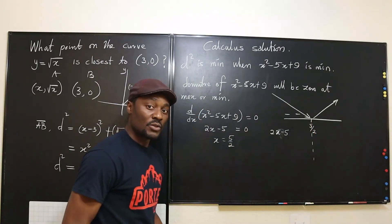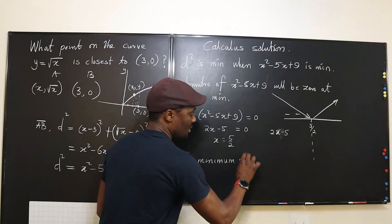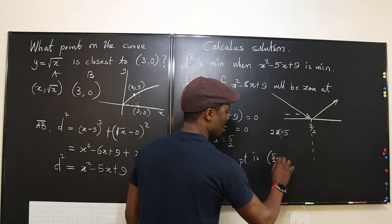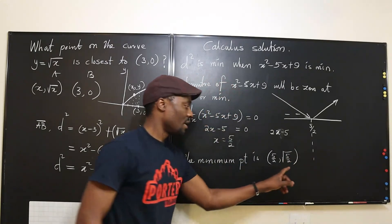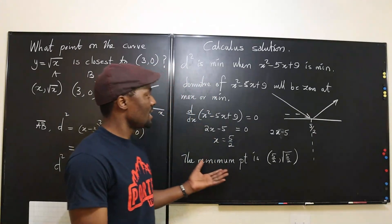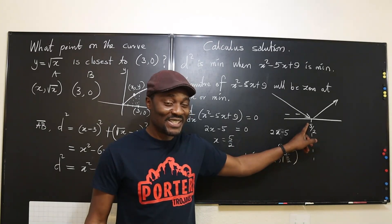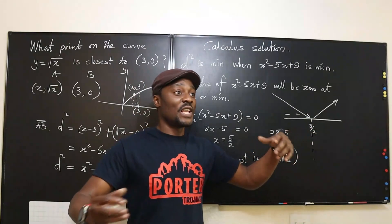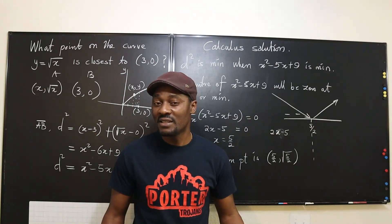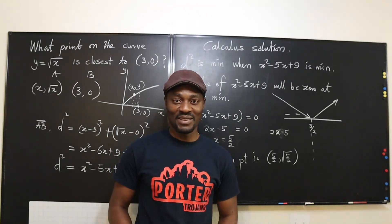So the minimum point is (5/2, √(5/2)). The y-coordinate is √(5/2) since y = √x on the curve. The calculus solution requires showing it's a minimum via the sign chart — you can't just assert it. It's possible in other problems that there's no minimum distance, so always verify. Never stop learning — those who stop learning have stopped living. Bye bye.